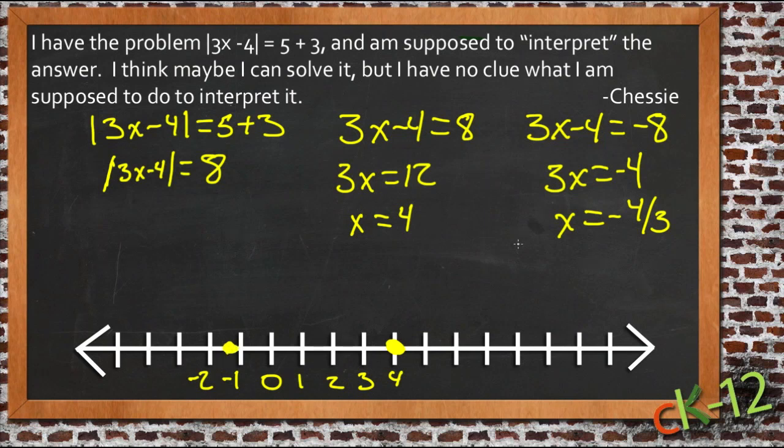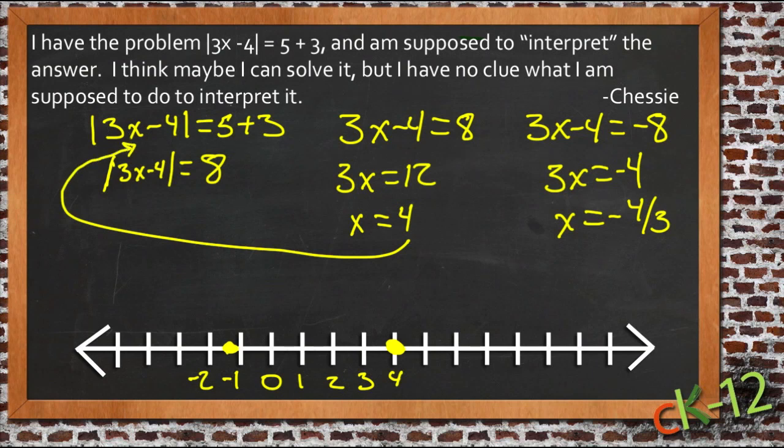So to interpret the answer, then, we have two possibilities. x could either be 4, in which case, if we were to insert that back in up here, we'd have 3 times 4, that's 12, minus 4, that's 8. Absolute value of 8 is 8, and 8 is equal to 5 plus 3. So that works.